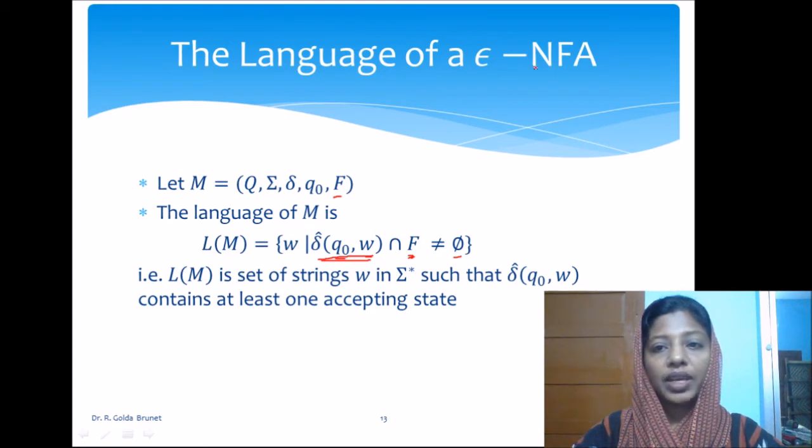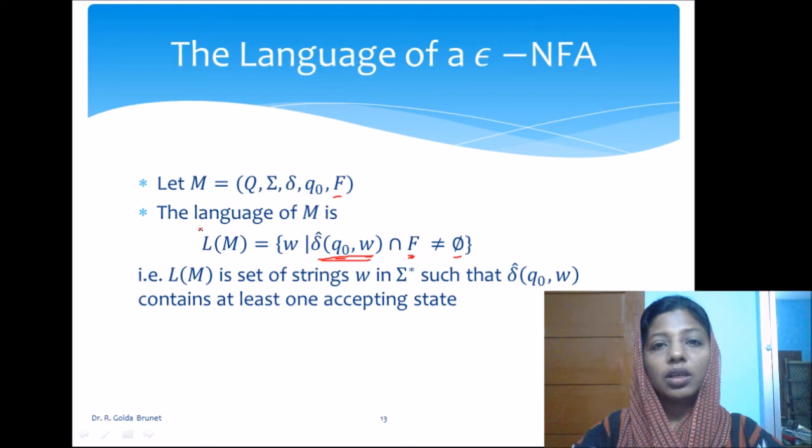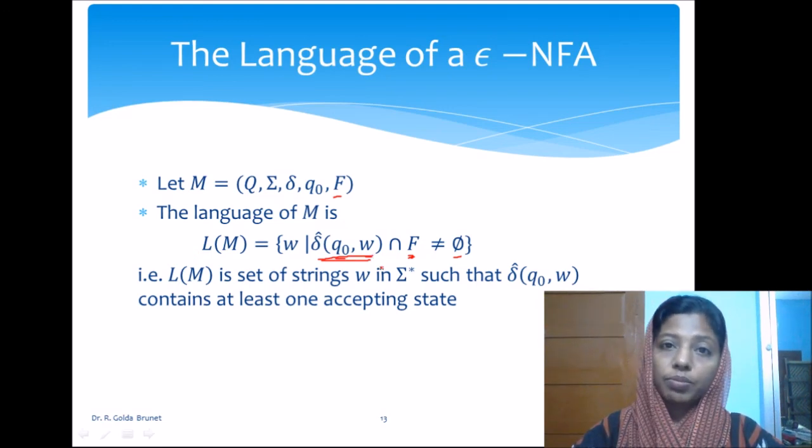the language of NFA. That is, any one of the paths leading from q naught should lead to any one of the final states. There should be at least one path taking the machine from q naught to one of the final states upon input w. After accepting w, we have to land in any one of the final states in any one of the paths.